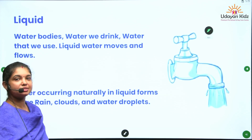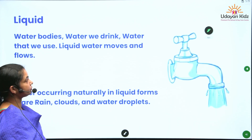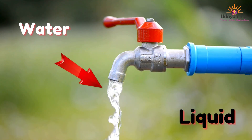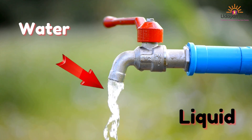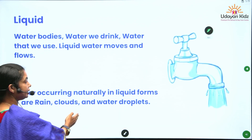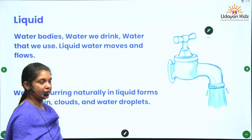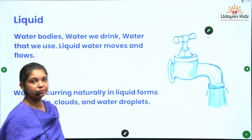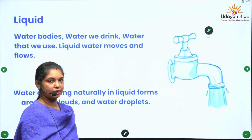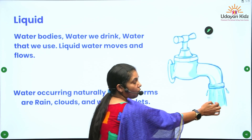The next one is liquid. Water bodies, water we drink, water that we use — liquid water moves and flows. Water occurring naturally in liquid forms includes rain, clouds, and water droplets. The water bodies are lakes, rivers, sea, and waterfalls. This is the example of liquid — it is also called water.